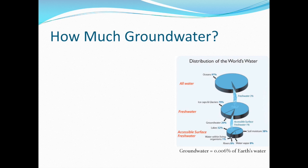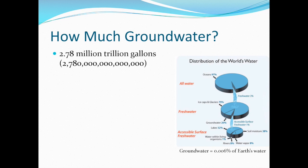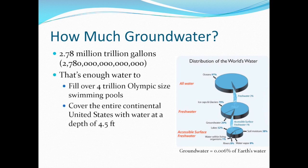Now how much groundwater do you think there is? You might be surprised to find out that there are 2.78 million trillion gallons of water stored underground. That's enough water to fill over 4 trillion Olympic-sized swimming pools, or enough to cover the entire continent of the United States with water at a depth of 4.5 feet.